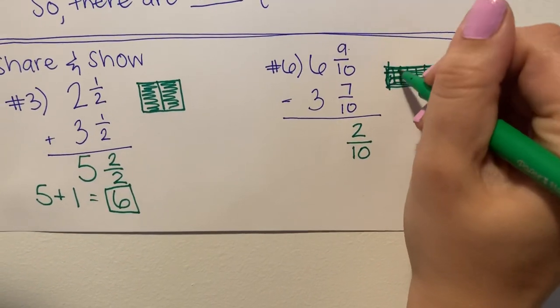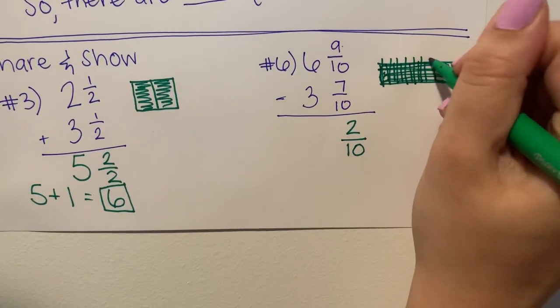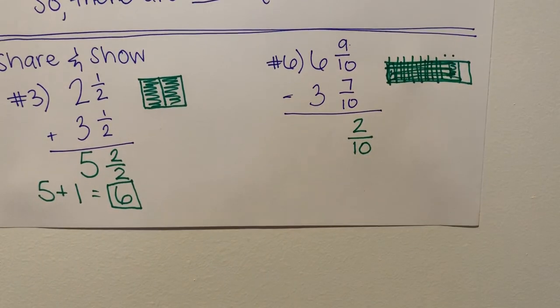And then you want to take away seven of those. So I know that I'm going to take away one, two, three, four, five, six, seven, and I have two parts left over.